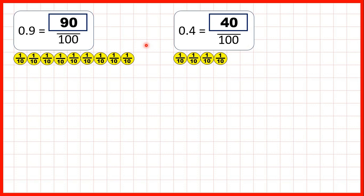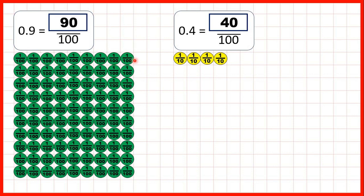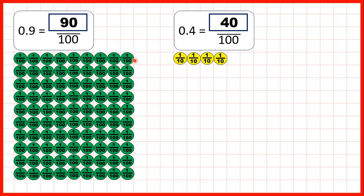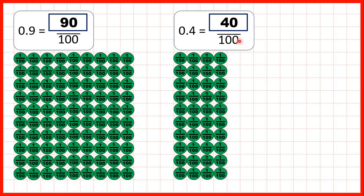We can also show what we did using place value counters. So because the first digit after the decimal point is the tenths digit, with 0.9 we have 9 tenths. But each of those tenths can be exchanged for 10 hundredths, so that gives us 90 hundredths altogether. And with 0.4, we have 4 tenths, but if we change those tenths into hundredths, we get 40 hundredths.